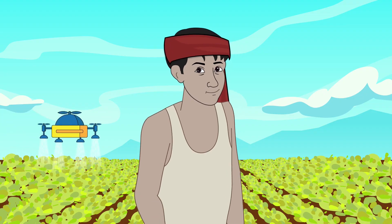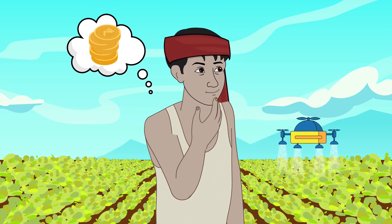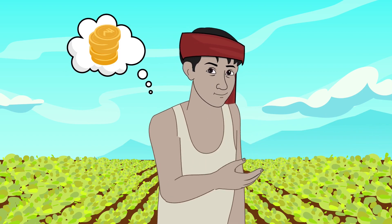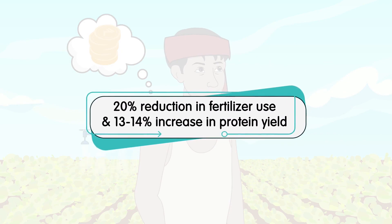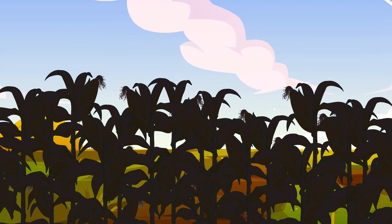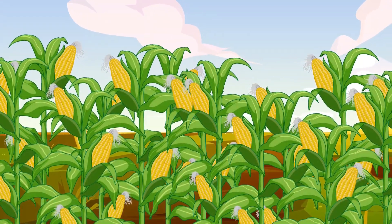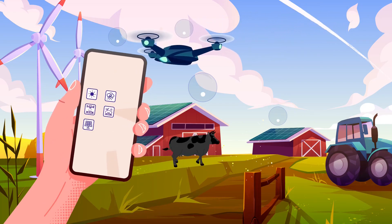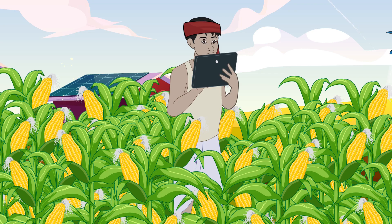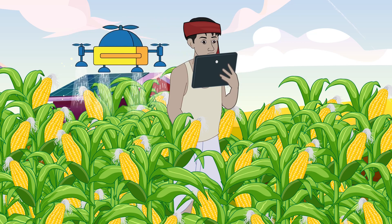Some key benefits of precision farming using drones include the potential to double farmers' income. Drones use maps to distribute the appropriate amount of fertilizer in each crop zone, leading to a 20% reduction in fertilizer use and a 13 to 14% increase in protein yield. It helps in decreasing poverty levels by increasing harvest yields and reducing crop damage. A cloud-based system provides data like weather, soil quality, and commodity prices, with smartphone-based drone technology control for immediate report generation.